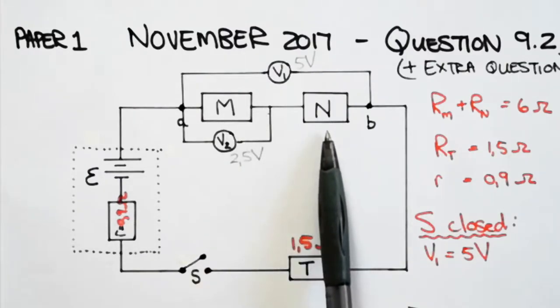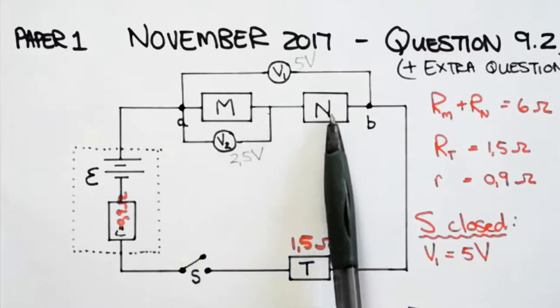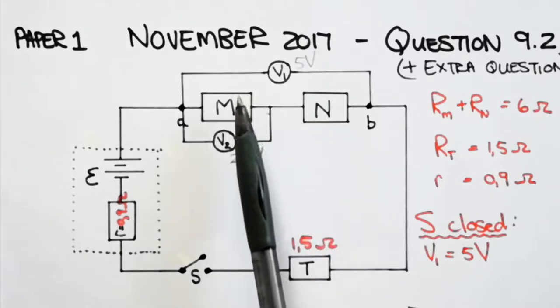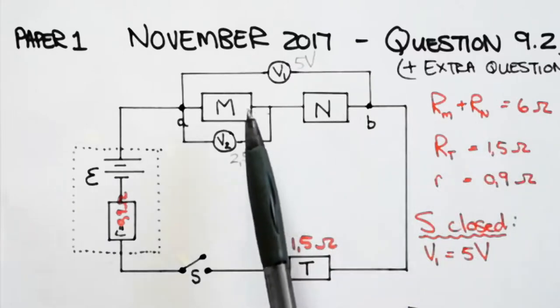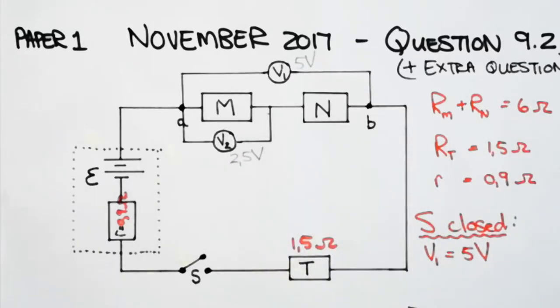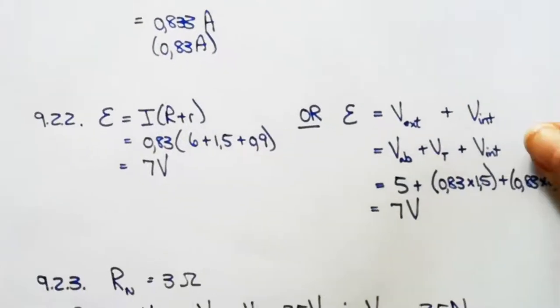So if this total voltage is 5 volts and this voltage is 2.5 volts, then surely the voltage across N must also be 2.5 volts. So they have the same voltage across them. So they must be exactly the same resistance. The total resistance was 6 ohms. So they must both be 3 ohms. I've written the answer out for you guys.